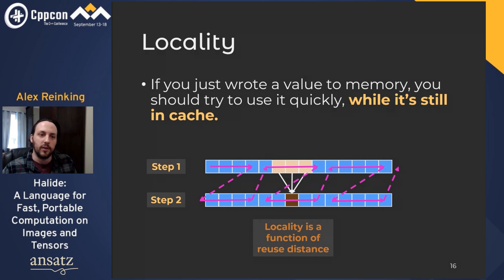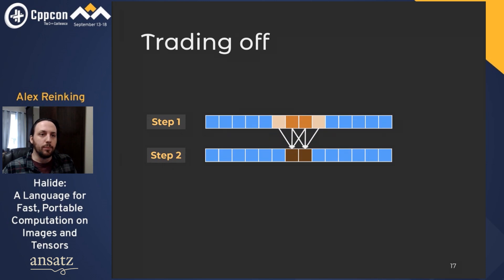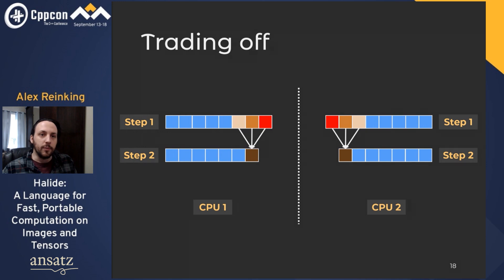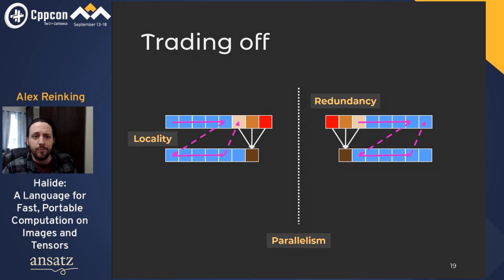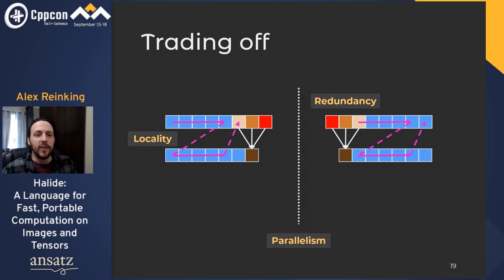It isn't obvious how you can parallelize a fused two-step process — that interleaving looks pretty hopeless from a parallelization perspective. Instead, what we can do is break the dependency chain by introducing some redundant work. We could break this problem down by introducing only a small amount of redundant overhead per thread, giving us the best of all three worlds: multiple CPUs busy, each accessing its caches in a nice local way, without much redundant work. Trading off between locality, parallelism, and redundant recomputation is at the heart of optimizing any numeric pipeline.